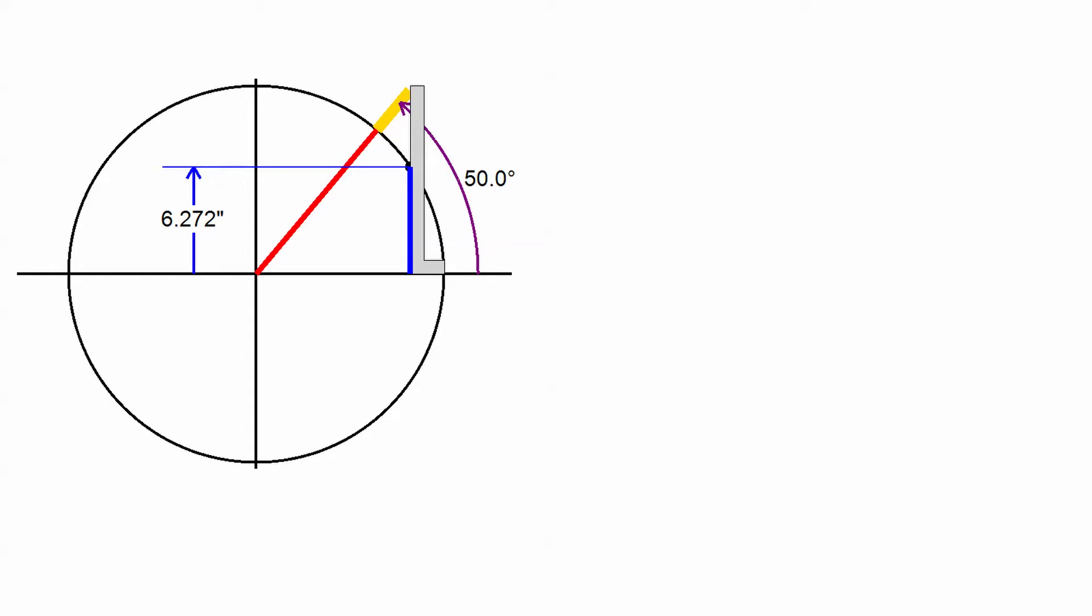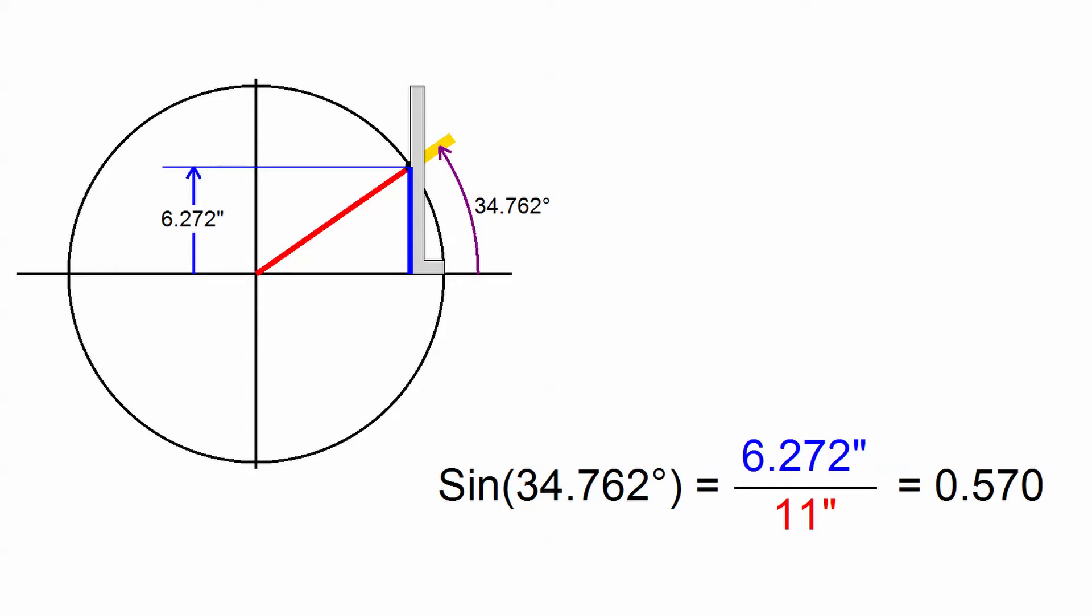I will now pull the protractor back down so that it goes through the center of the highlighted point. I'm now going to divide the vertical distance, which is 6.272 inches, by the radius, which is 11 inches. Note that the colors of the numbers match their corresponding distances on the wheel. The quotient of the division is 0.570. This number is called the sine of 34.762 degrees.